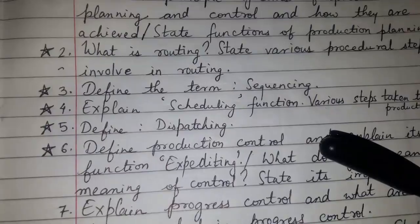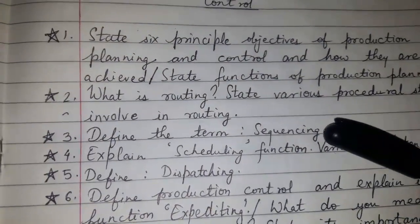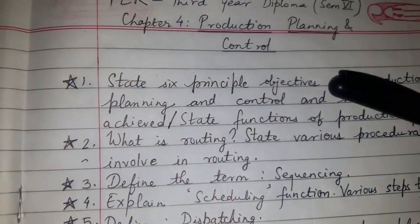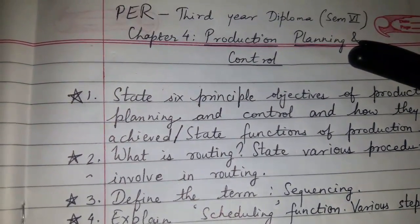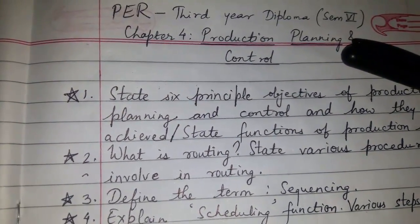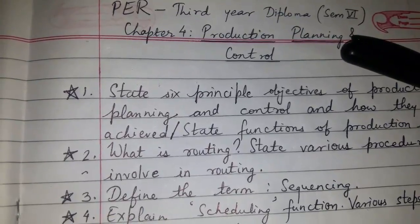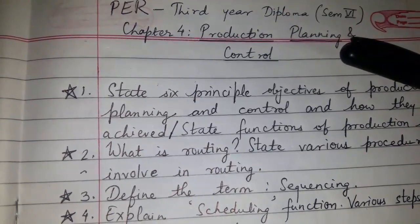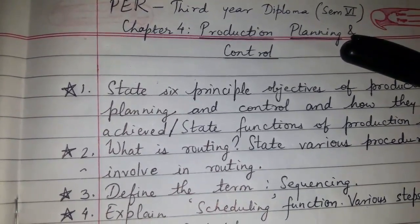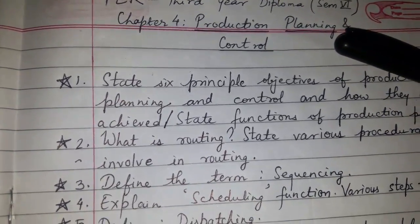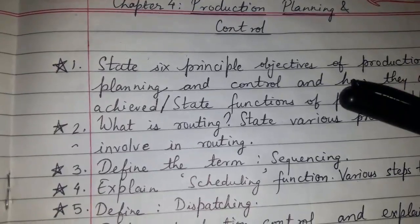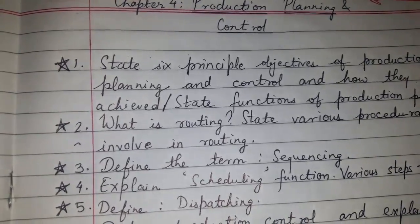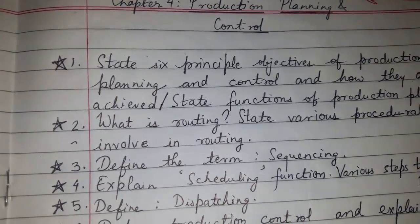Question 9: Explain the concept of line balancing, state its importance and objectives. These were the questions from the question bank for Chapter 4, Production Planning and Control, for the subject PER, third year diploma semester 6. Please like, comment, share, and subscribe. Thanks for watching.